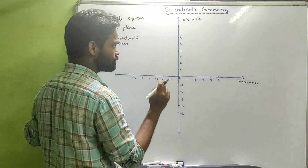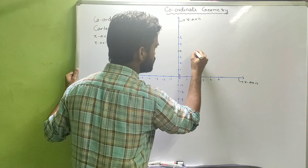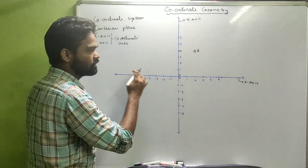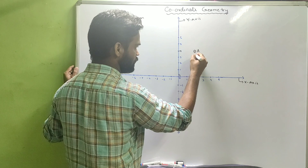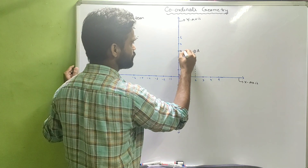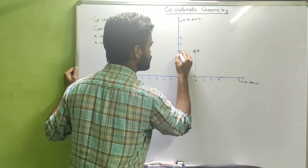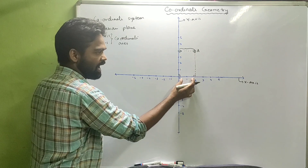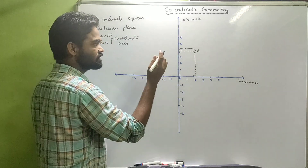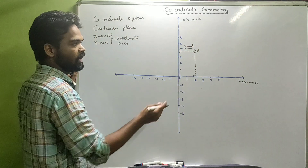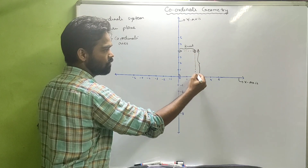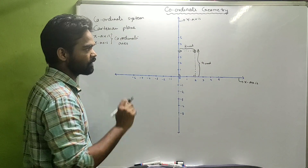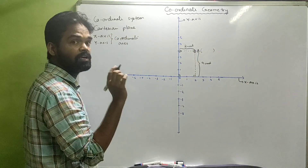Suppose I take a point A. To represent this point A with the help of these two number lines, I'll draw two perpendiculars on the coordinate axes. From here to here, the point A is at a distance of 2 units from the y-axis, and the point A is at a distance of 4 units from the x-axis. So A can be represented as an ordered pair.